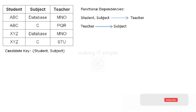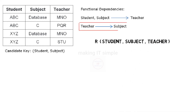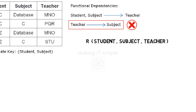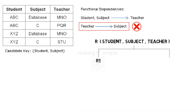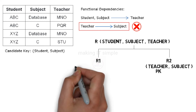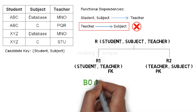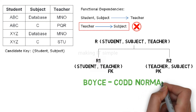To transform this table into Boyce-Codd normal form, we need to decompose it. We had a relation R with student, subject, and teacher attributes, where the dependency teacher determines subject is not allowed. We decompose R into two tables: R1 and R2. R2 will contain the attributes from the violating functional dependency — teacher and subject — where teacher is the primary key. R1 will have student and teacher attributes, where student is the primary key and teacher is a foreign key referencing R2. The relation is now decomposed into two relations and transformed into Boyce-Codd normal form.